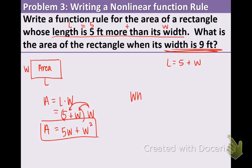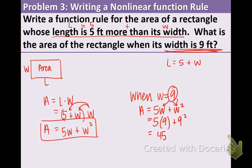Here's our formula. And now we're given that w equals 9. So we're going to plug that in for the w in both places of the equation. So we have 5 times 9 plus 9 squared. 5 times 9 is 45. 9 squared is 81. Add those together and you get 126. So the area of the rectangle when the width is 9 feet is 126 feet squared, or square feet.